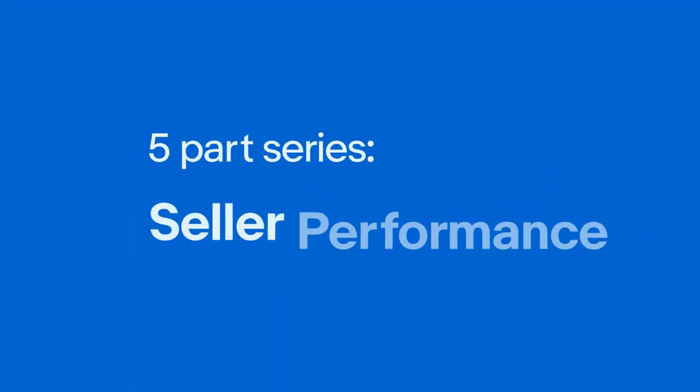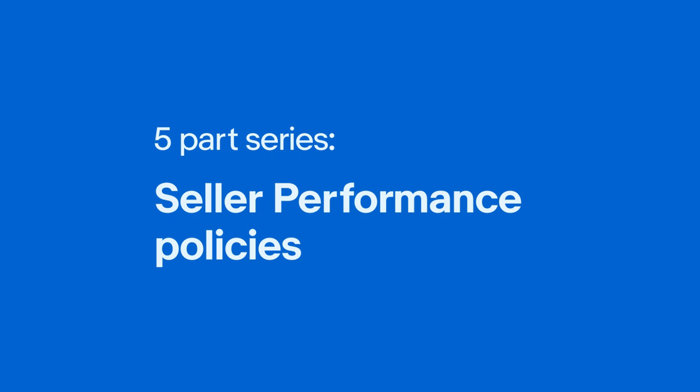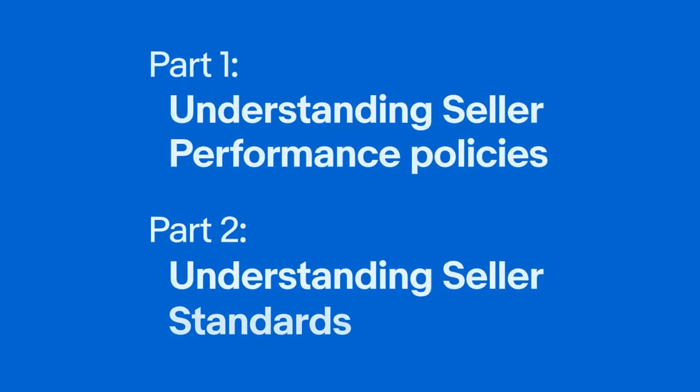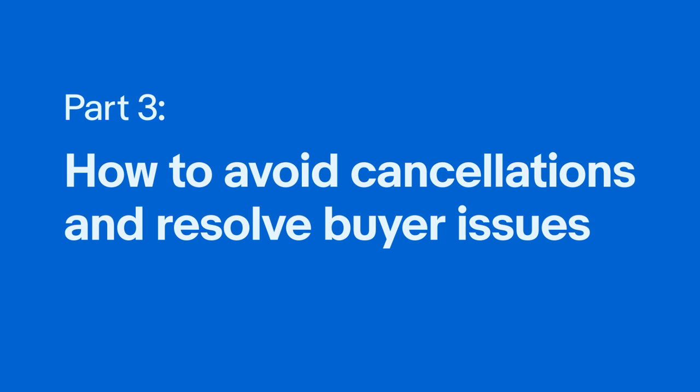Welcome back to our five-part video series on seller performance policies. In this series, we'll explain how we evaluate sellers on a monthly basis to ensure a great experience for you and your buyers. In parts one and two, we gave an overview of our seller performance policies and seller standards. Next, we'll explore ways to help you prevent cancellations and promptly address buyer issues to reduce your transaction defect rate.